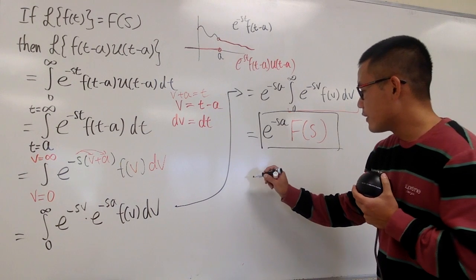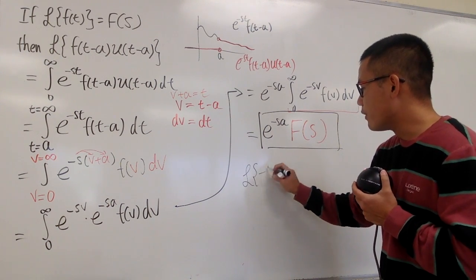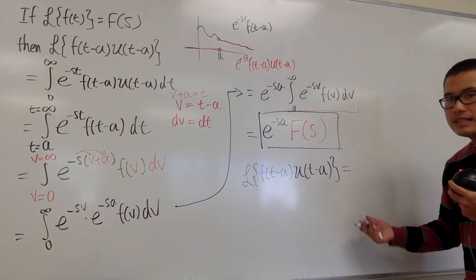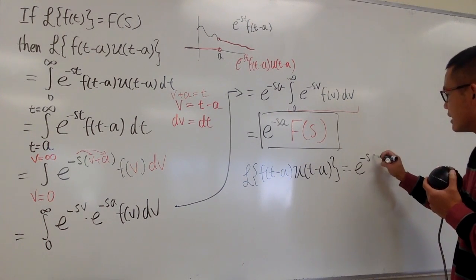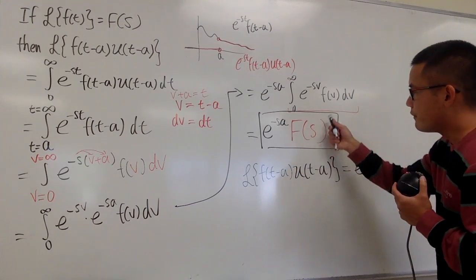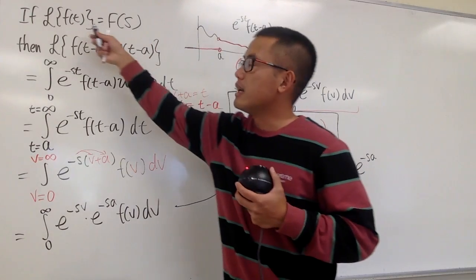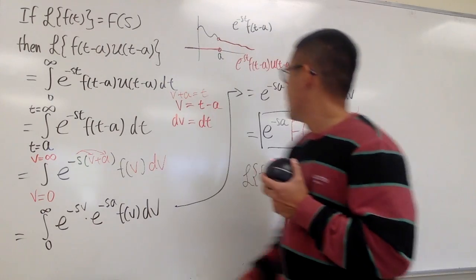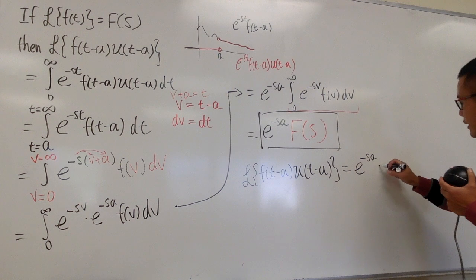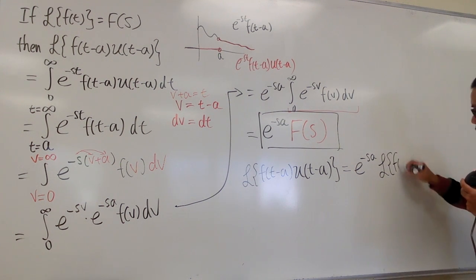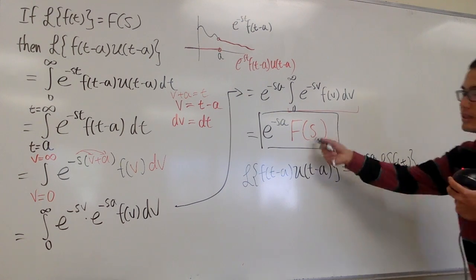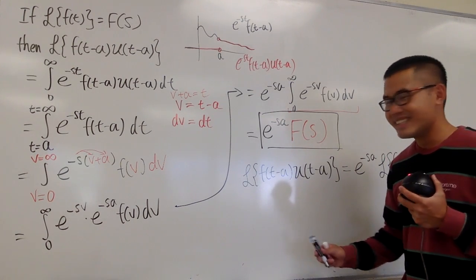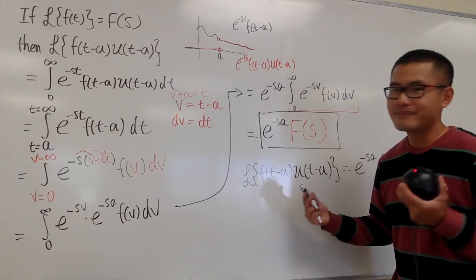A quick summary: the Laplace transform of f of t minus a times u of t minus a is e to the negative s a times F of s. This input doesn't matter — originally we used t, but in the proof it happened to be phi. If you want to be consistent, this is f of t which is the same as F of s. However, how often will we get that the inputs of these two things are the same? Not so often.